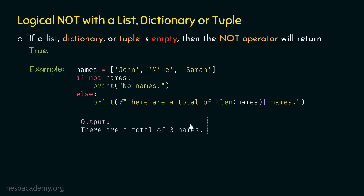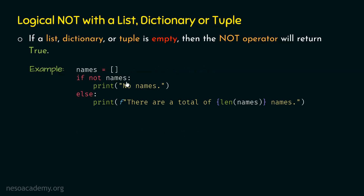Now, what if the list is empty? In that case, this condition is satisfied because not of an empty list will return true. Therefore, 'no names' will be printed on the screen and the output of this program is 'no names'. I used a list in this example, but you can use a dictionary or a tuple and the same concept applies. We just need to remember that if a list, dictionary, or tuple is empty, then the not operator will return true. So whatever we have seen in this example for the list is equally applied to the dictionary and the tuple.